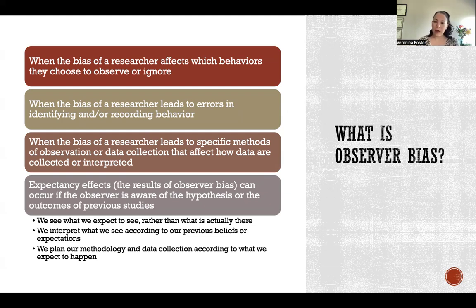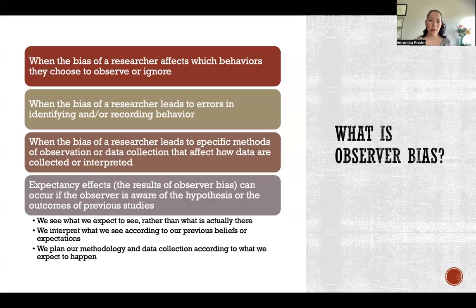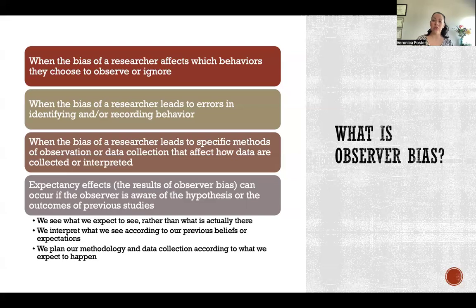Expectancy effects are the result of observer bias — basically the effects of the observer having an expectation about what the results will be or about what is going to be relevant to observe for the study. This can happen if the observer is aware of the hypothesis, or aware of previous studies that looked at the same behaviors or made similar types of observations. So an observer can be biased because of their knowledge of previous research.